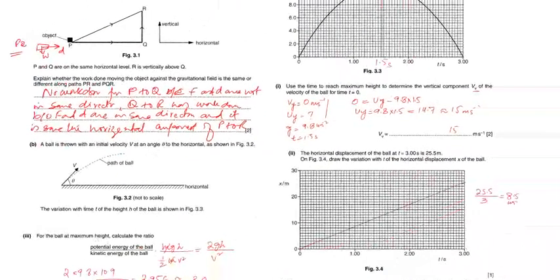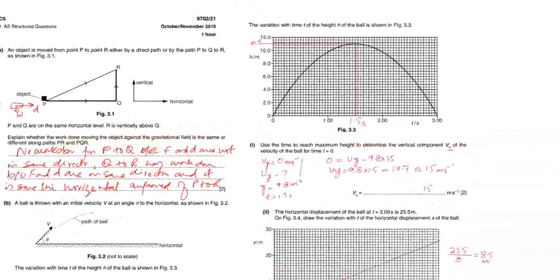The variation with time T and height of the ball is shown in this figure. So from this figure you need to find the maximum height which is 10.9 and the time. You know the time to reach maximum height is exactly half of the total time, which is 1.5 seconds.